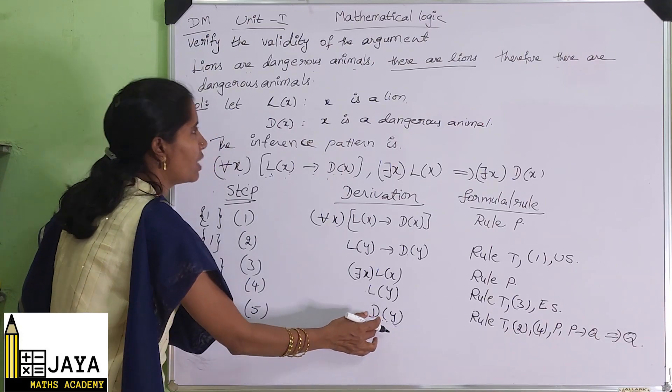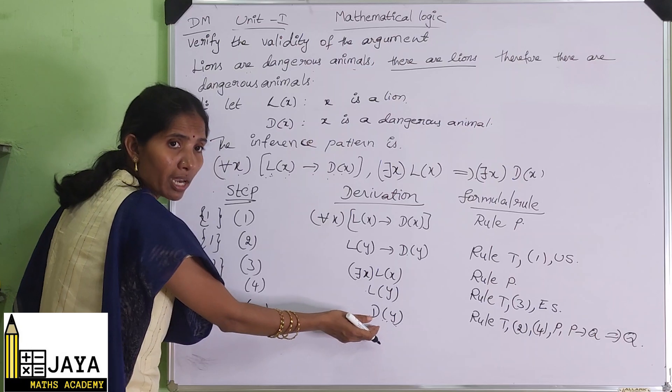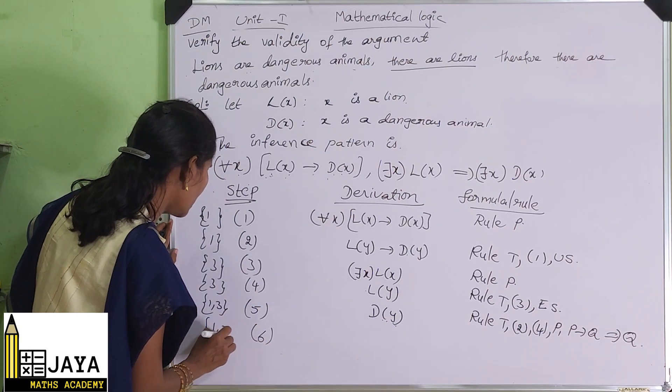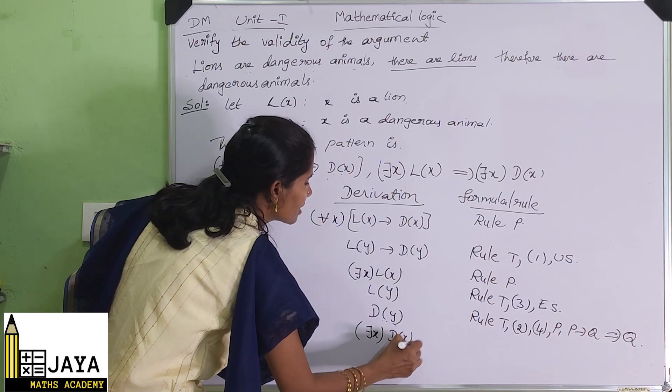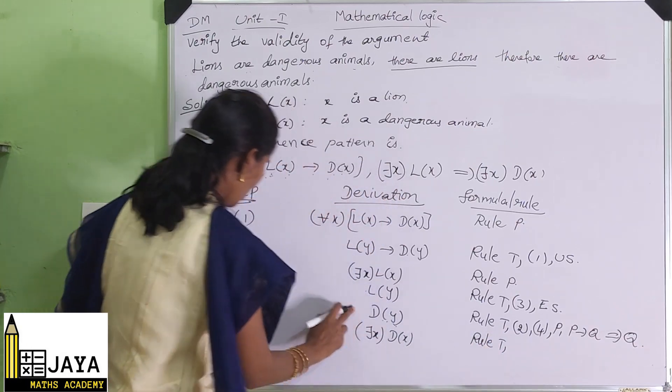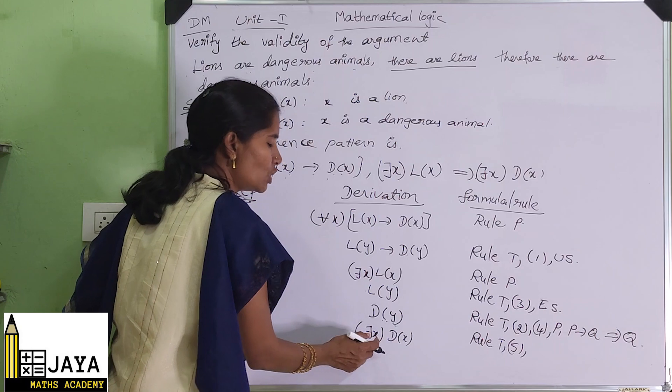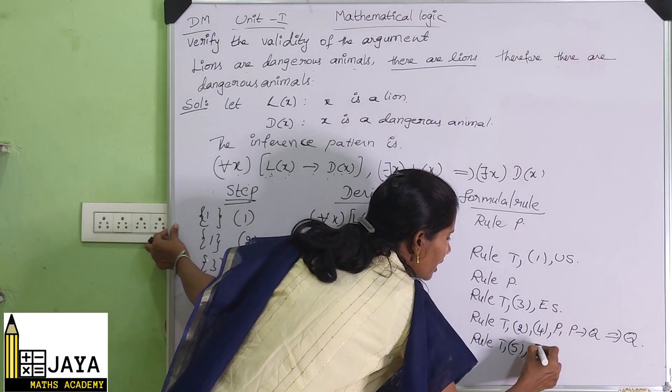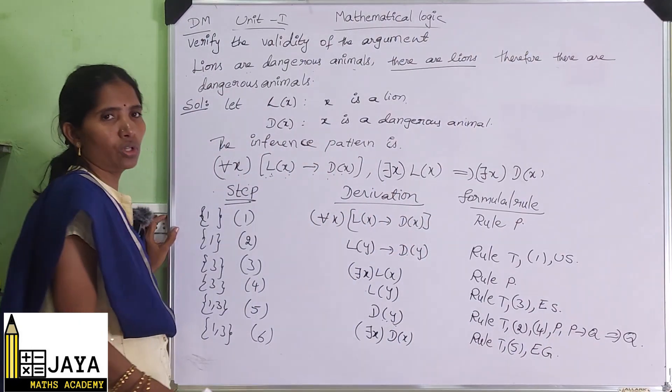Then for D(y), we need there exists x, D(x). So we want to add there exists x in the next step. From the same premises, there exists x, D(x). It is from rule T, from the 5th step, step number 5. There exists we added. Existential generalization we used.